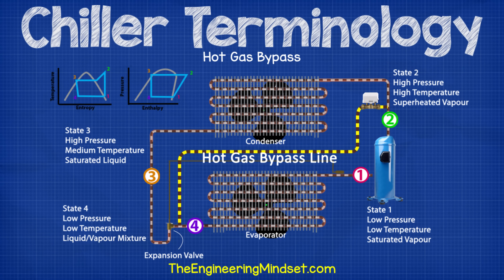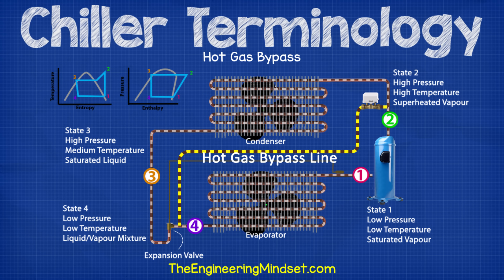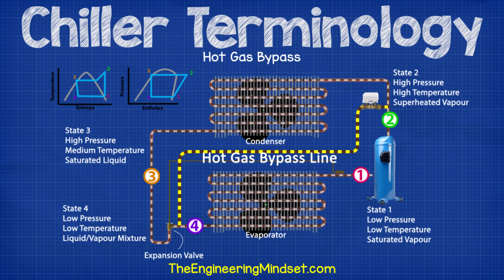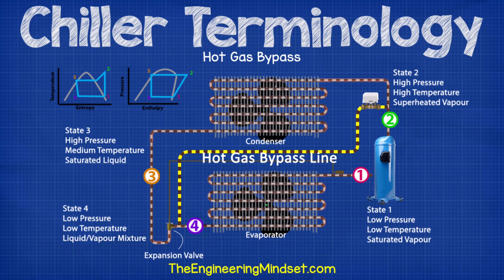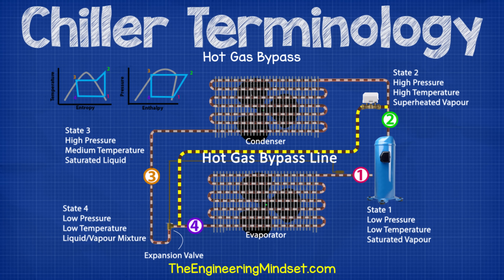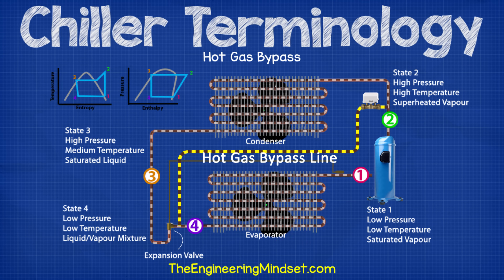Hot gas bypass. This is only used on some chillers. It is used to create an artificial cooling load to stop the chiller from cycling, stalling, or surging, as well as protecting the evaporator from freezing under low load conditions. A control valve is used along with a pressure-reducing valve to recirculate hot refrigerant from the compressor discharge line and send it straight to the inlet of the evaporator, bypassing the condenser so that heat is added to create a false load. This is a pretty inefficient strategy — the energy that went into the compression of the refrigerant will provide no usable cooling effect. If you're using this strategy, then your chiller is likely way oversized.